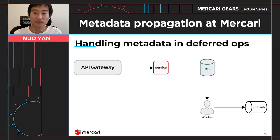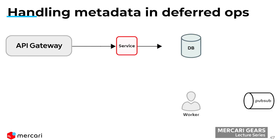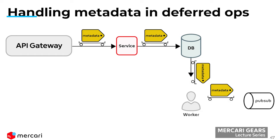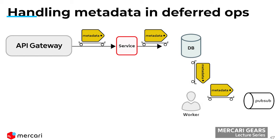For handling metadata in deferred operations, consider this example: the API gateway gets a request and attaches metadata to propagate to services. The first service receives it and writes to the database. At this point the metadata flow is finished. But then a worker polling the database detects a value it cares about and sends requests to PubSub or other services — at this point, it has already lost track of the original metadata set by the API gateway, because it's a different workflow.